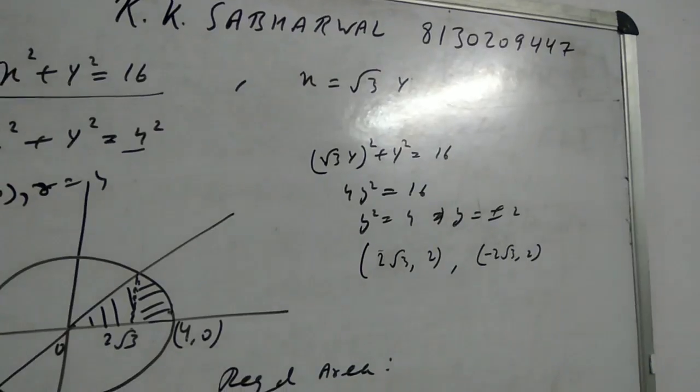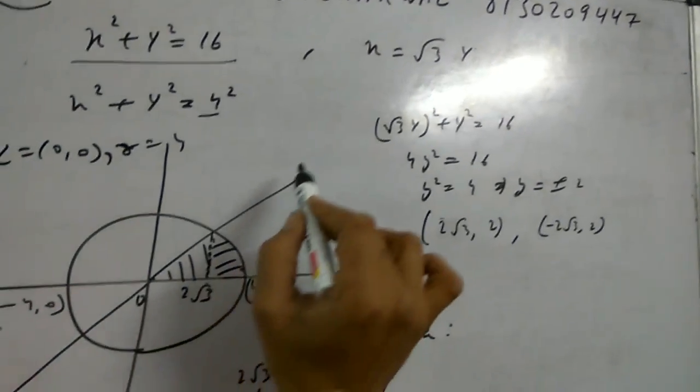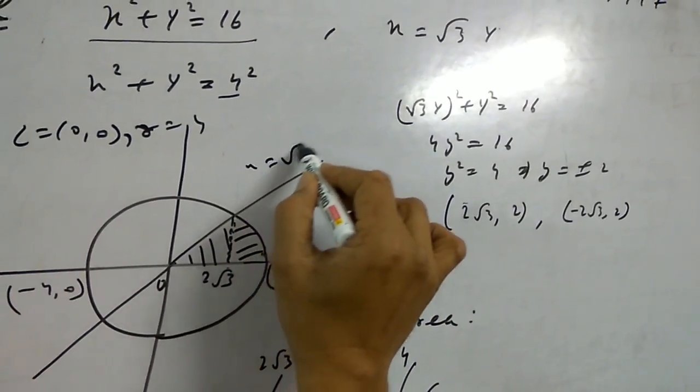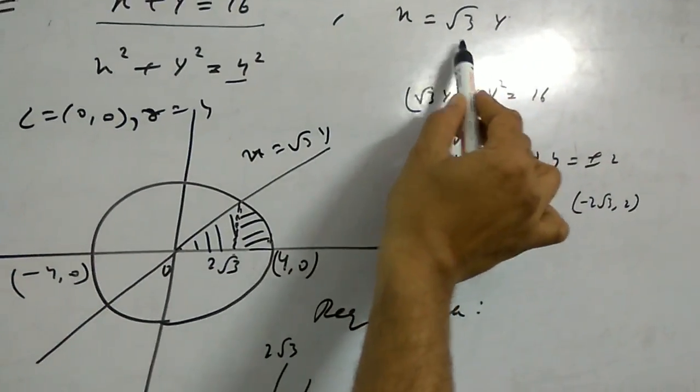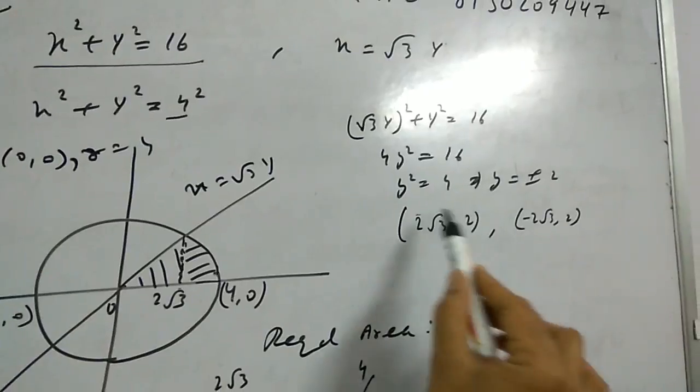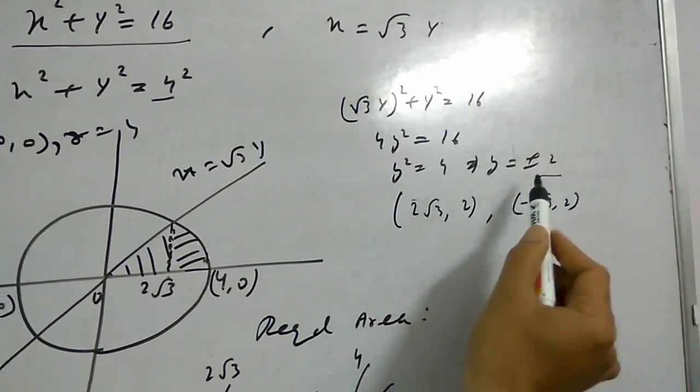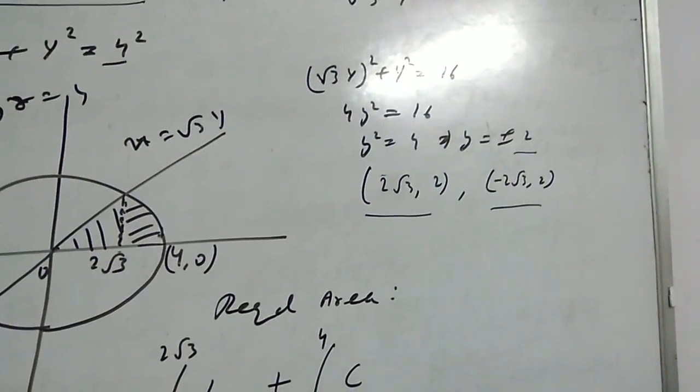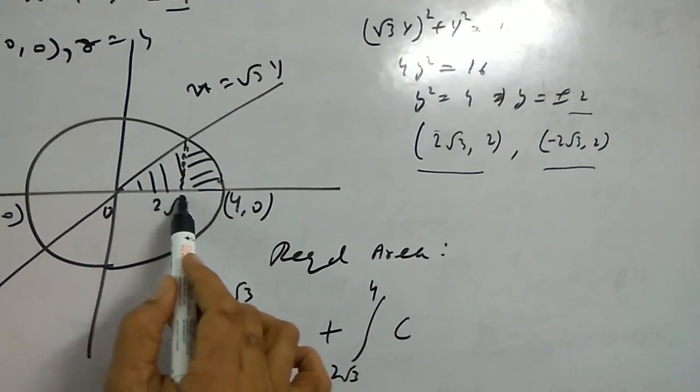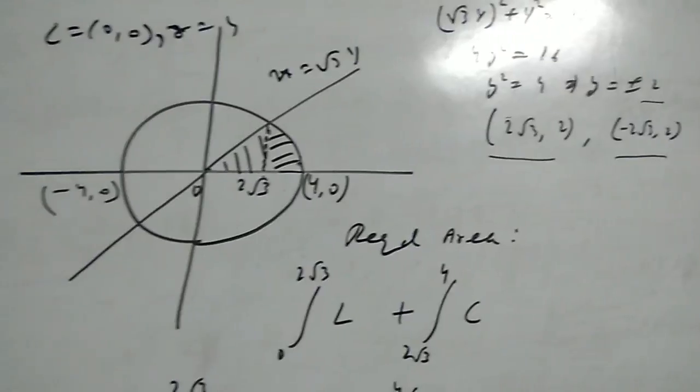If x equals root 3y, we have the line passing through origin. Now the intersection point: substitute x equals root 3y into the circle equation. We get y equals plus or minus 2. If y equals 2, then x equals 2 root 3. In the first quadrant, we don't need negative, so x equals 2 root 3, y equals 2.